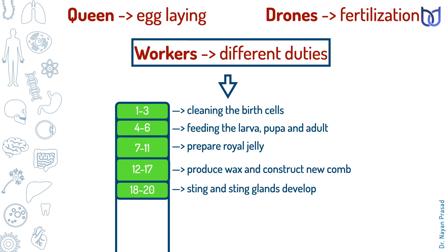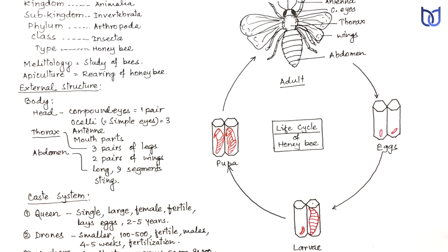And from 21st day, in the fourth week, they become field workers, collect pollen and nectar from different flowers, protect the hive, and produce honey. Thus, in different phases of life, worker bees perform different duties. This is all about the life cycle.